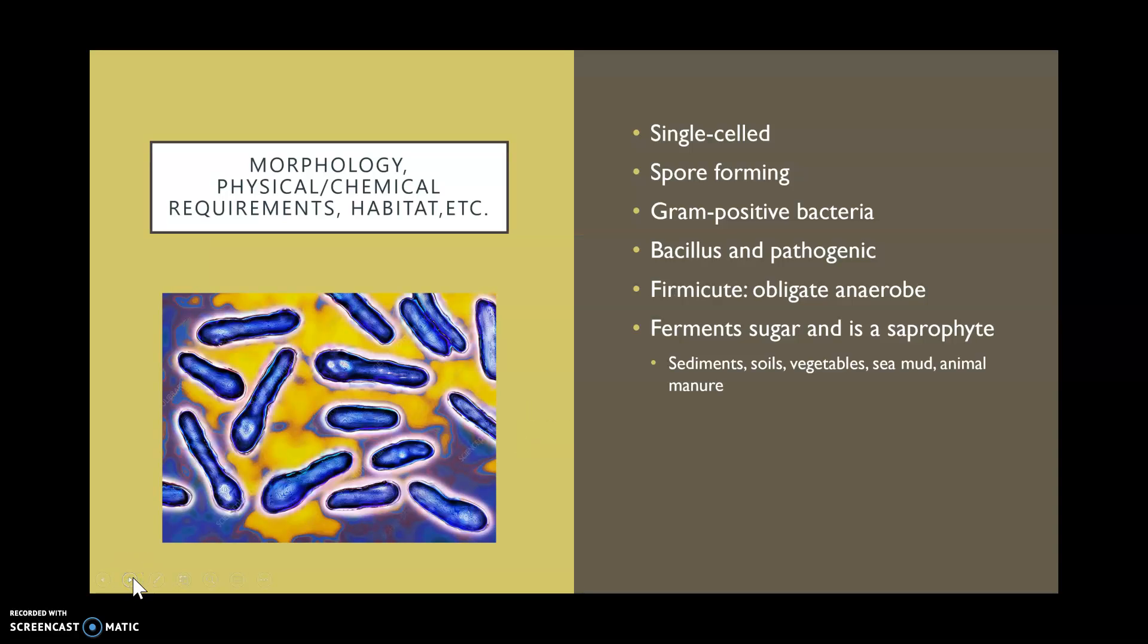Clostridium botulinum is a single-celled spore-forming gram-positive bacteria. It is bacillus in shape and highly pathogenic. It is also labeled as a firmicute and it's an obligate anaerobe, which means it does not need oxygen and therefore it ferments sugar.